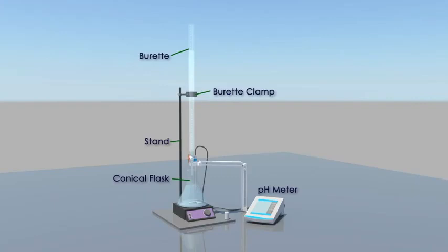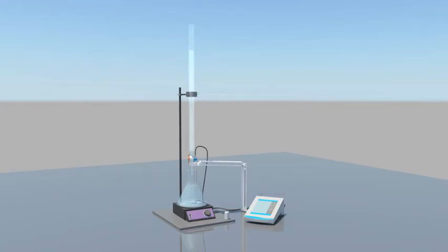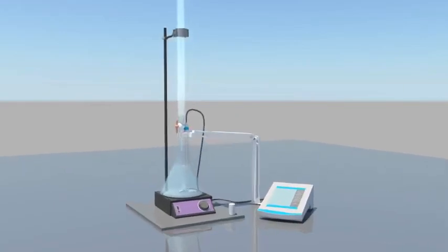You add a milliliter at a time or some small volume at a time of base and measure how the pH changes in response to the addition of the base. One thing I want to point out here is that the conical flask with the buffer on it is sitting on top of a magnetic stirrer, so that device with the lavender-colored front and the knob on it has a magnet inside that spins, and you control the speed of the spinning magnet with that knob on the front of the device.